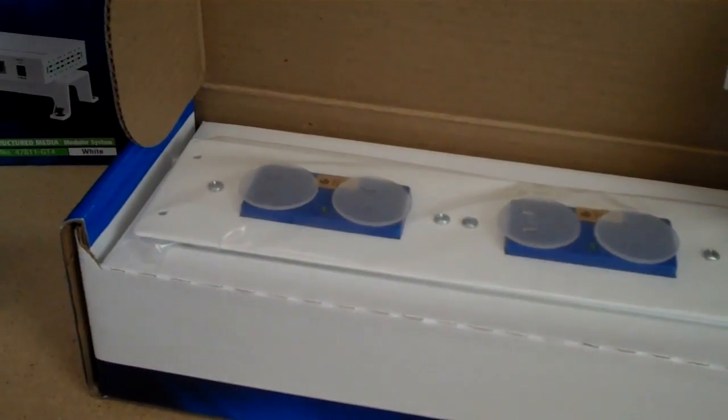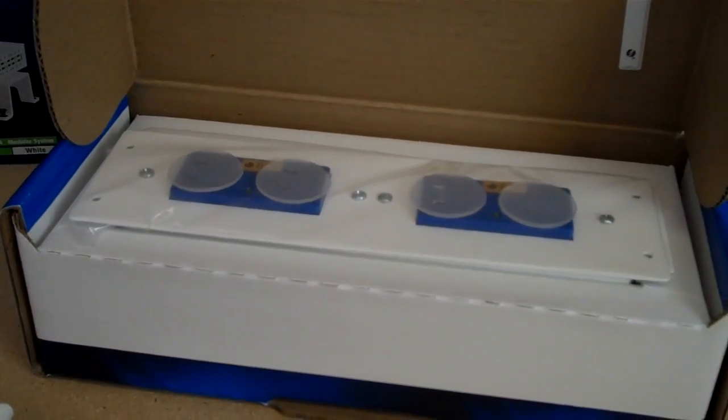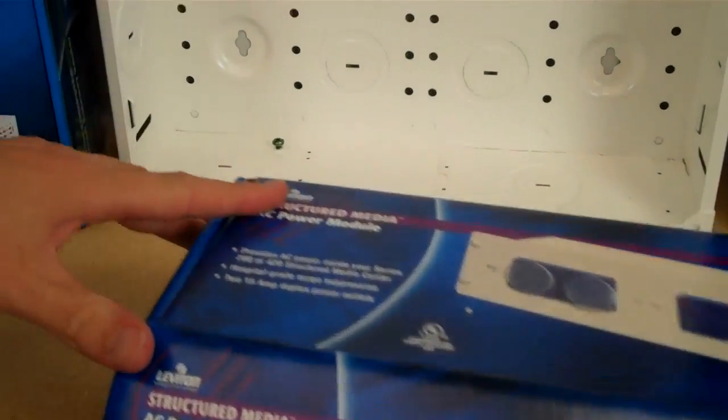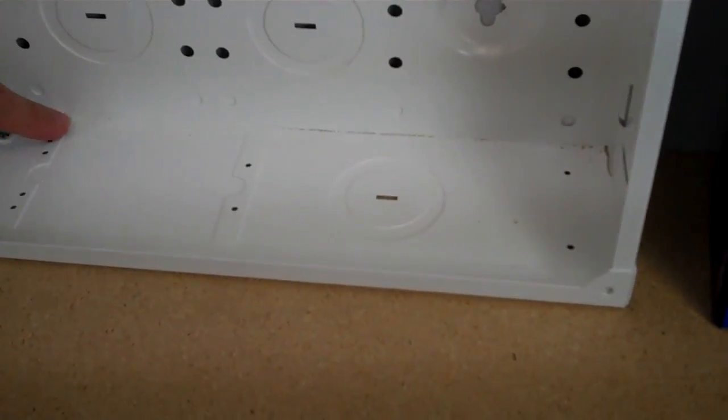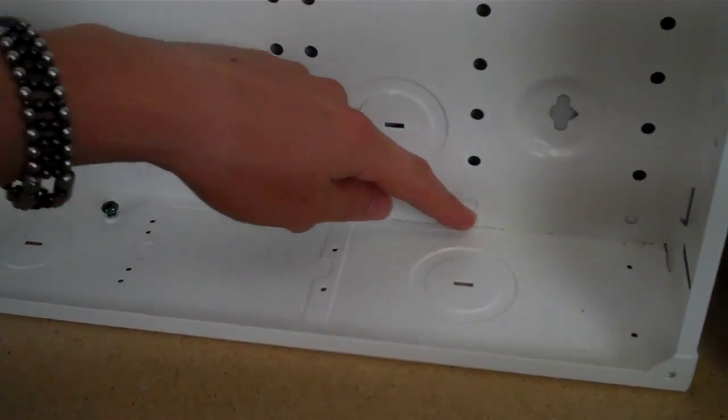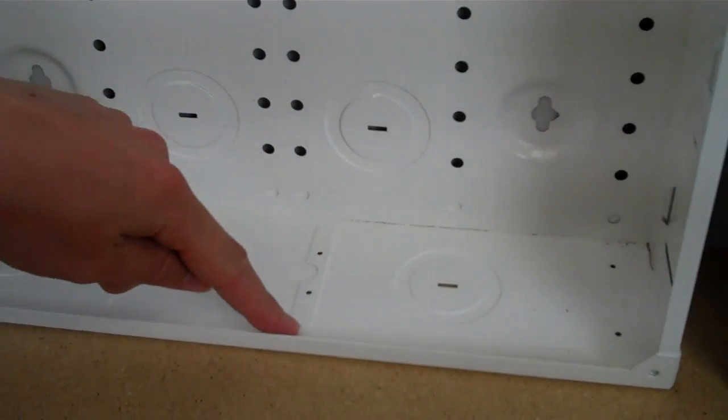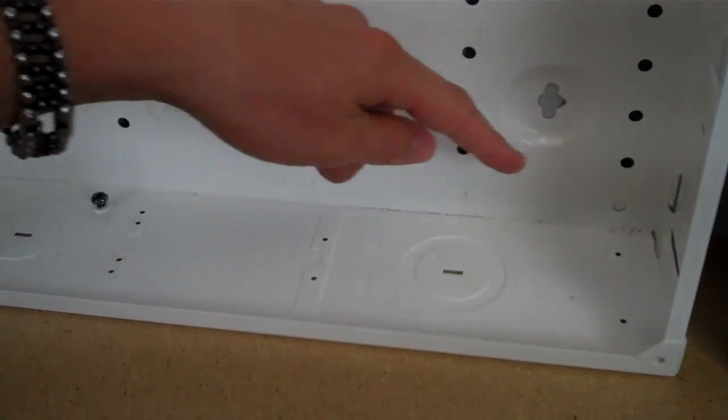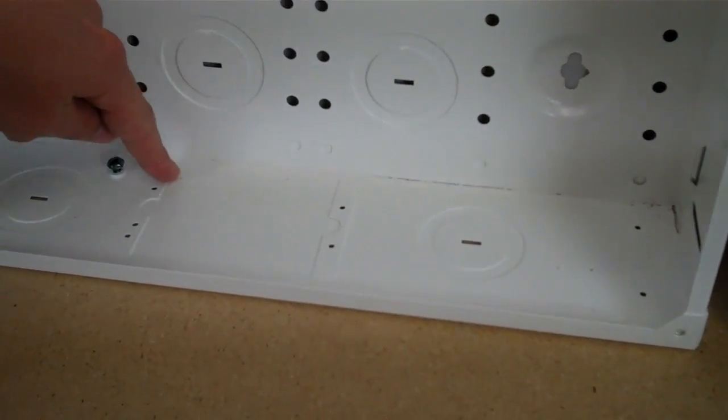So here's one with the four outlet. All of these modules mount onto the punch outs on the bottom. There you see the punch outs that you need to punch out. And that's the one, the big one, that allows you to install the four outlet one.